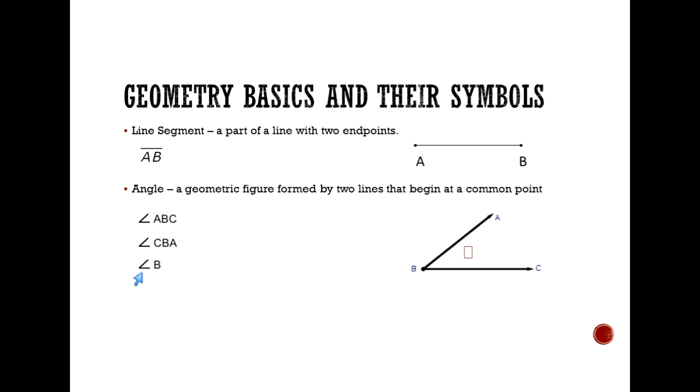You can also name an angle by using three letters. Notice that the B is sandwiched in between on the two longer ways, and you could either say A, B, and then C, or C, B, and then A. So three different ways to name an angle. But no matter which way you choose to name it, all will include the angle symbol.